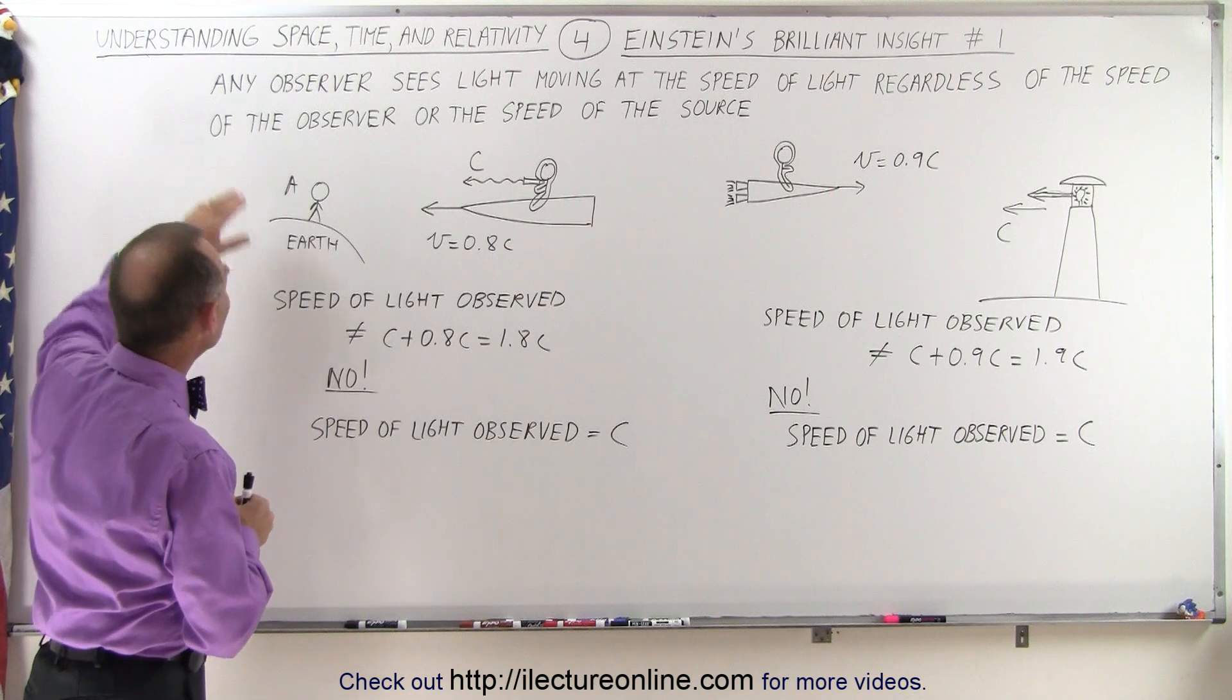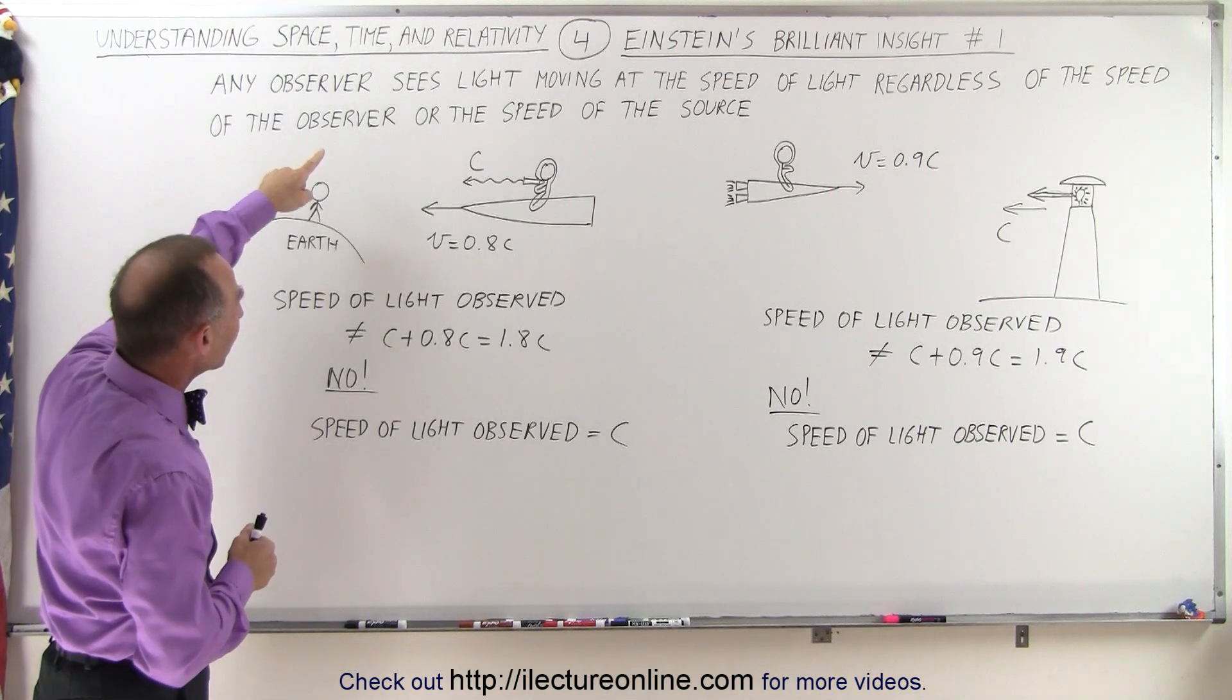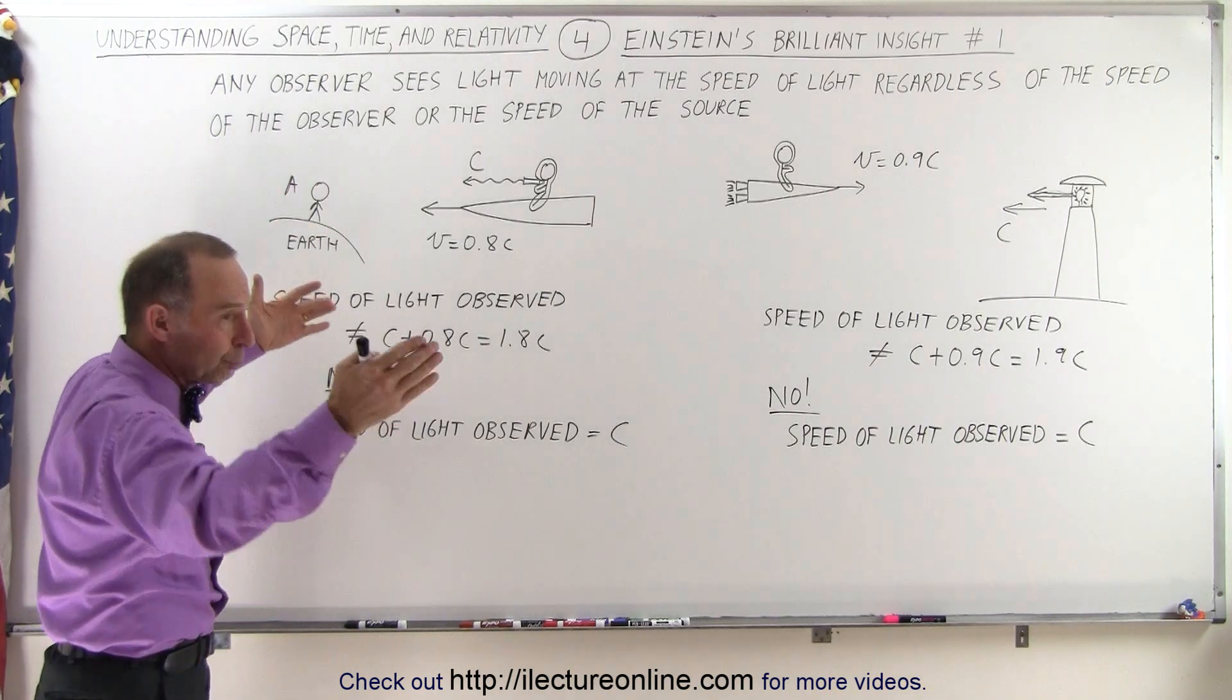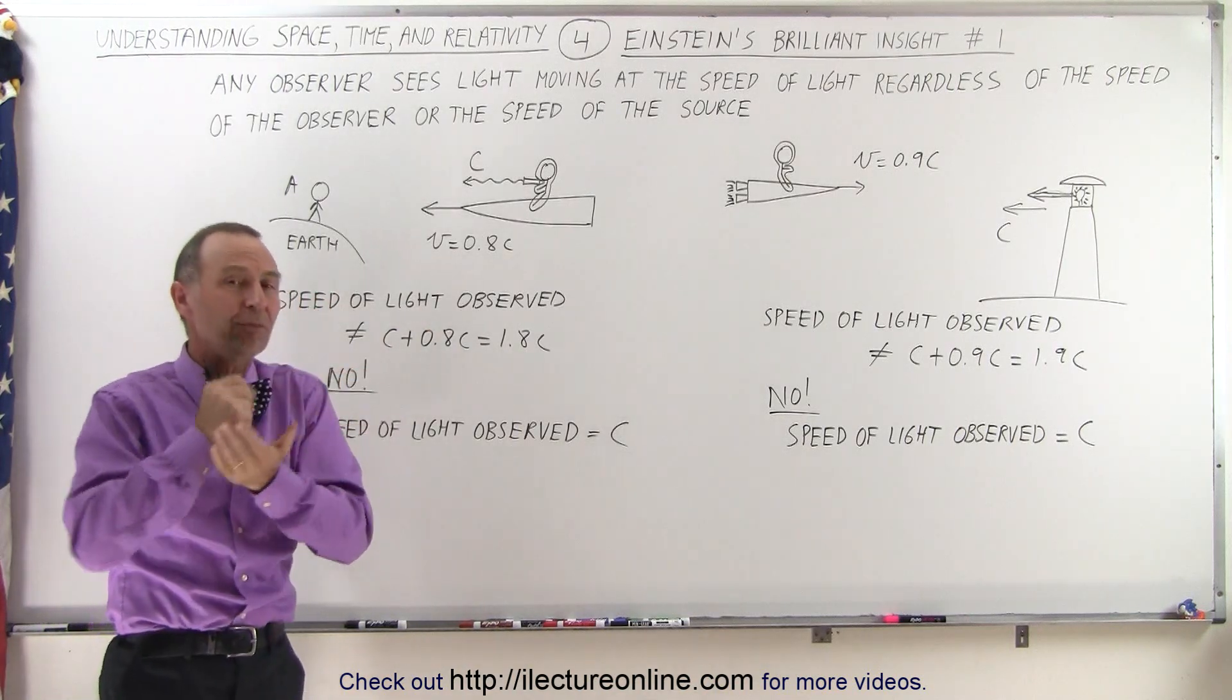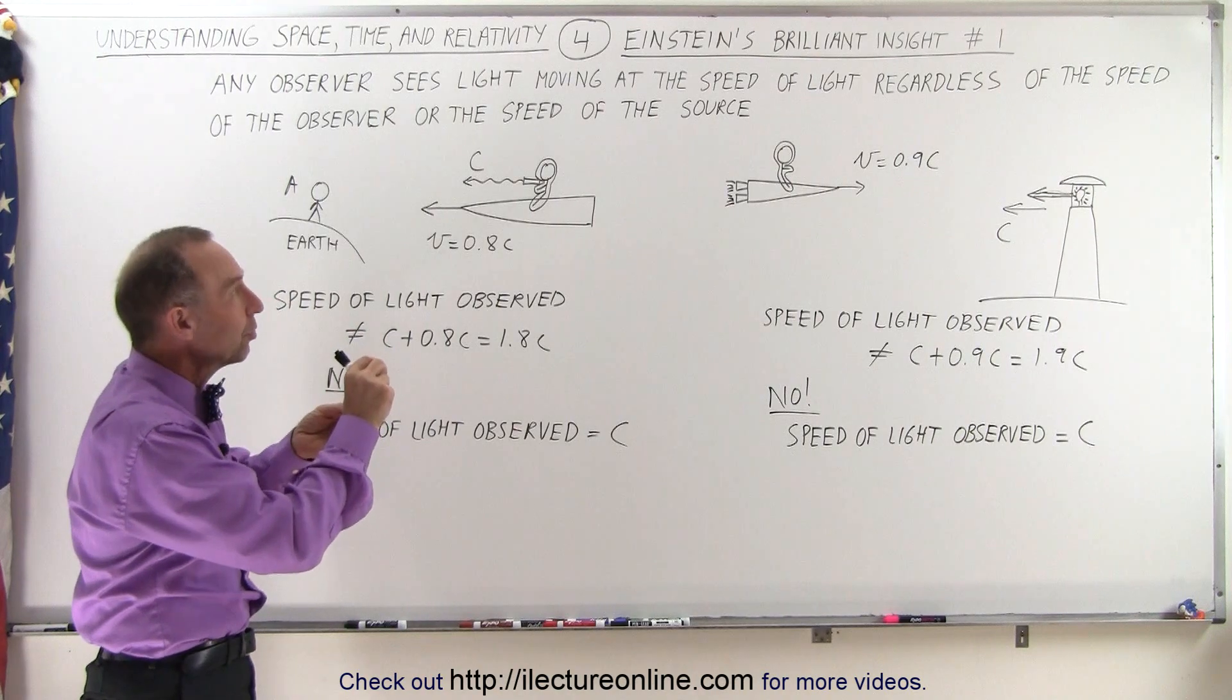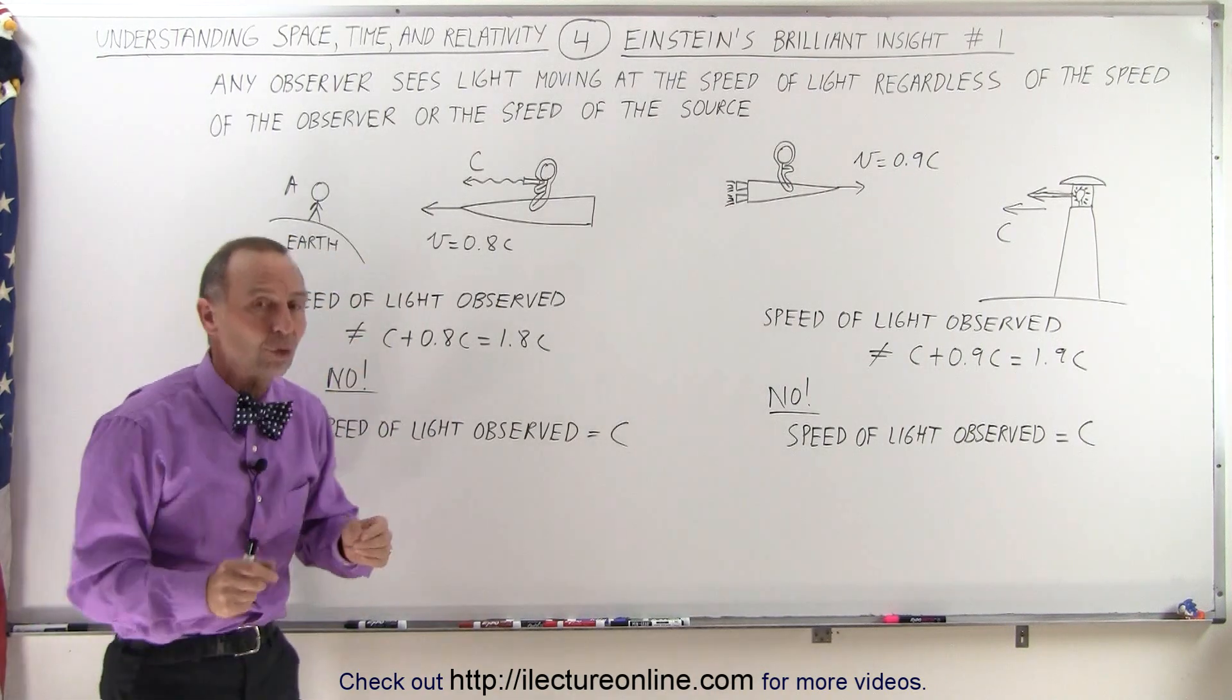So what Einstein said was that any observer that looks at a light beam, or light moving through space, sees that light moving at the speed of light, regardless of the speed of the observer or the speed of the source.